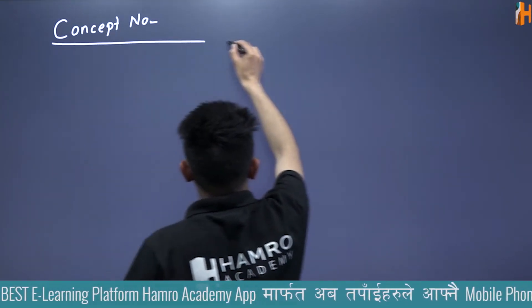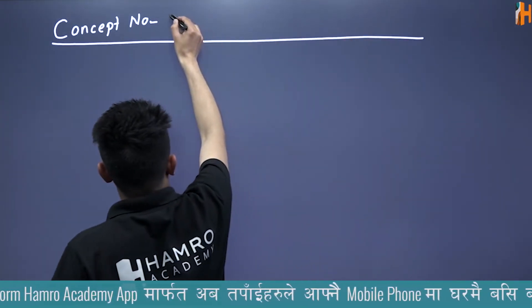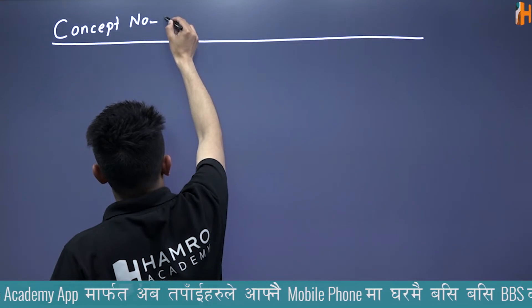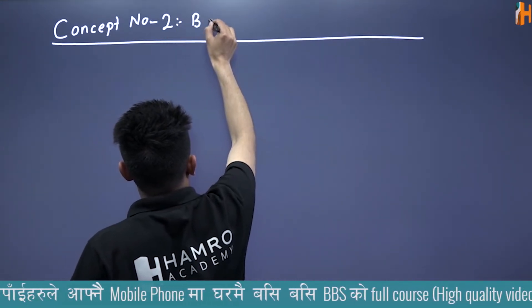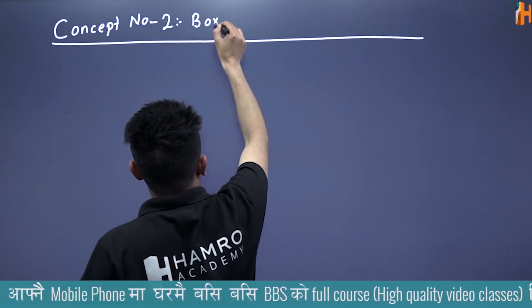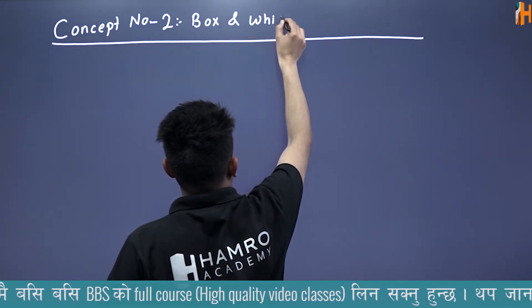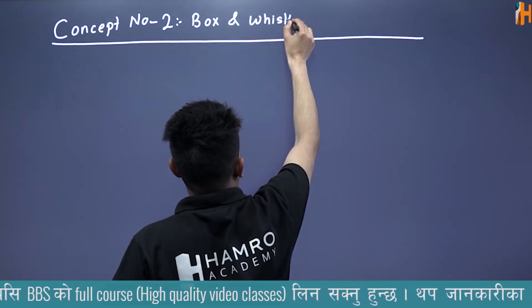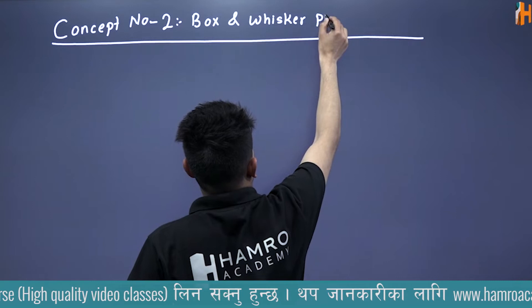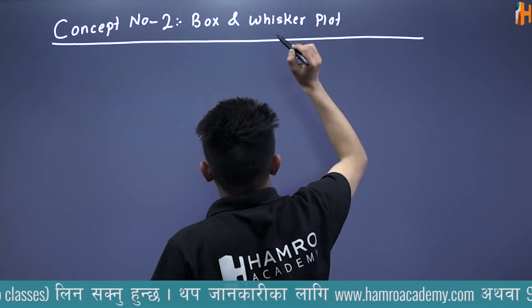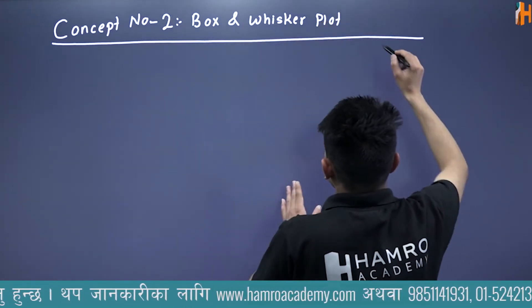Concept number 2 is box and whisker plot. Box and whisker plot. In the box and whisker plot,